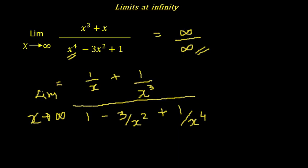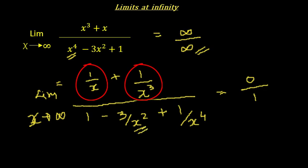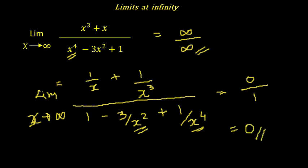What we have done is taken x to the power 4 and divided: x³ by x⁴ gives 1/x, x by x⁴ gives 1/x³, like that. This is the same expression in a different form. Now when we apply x equal to infinity, we get 0 plus 0, which is 0, divided by 1 — because 1/x as x tends to infinity is 0, 1 divided by infinity is 0. Hence the answer is 0; this rational expression approaches the value 0 as x approaches infinity.